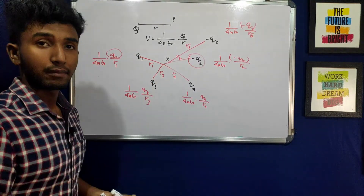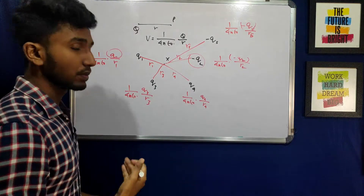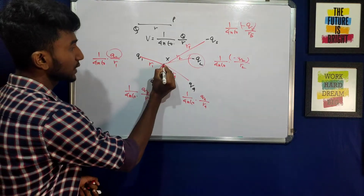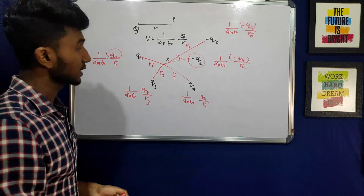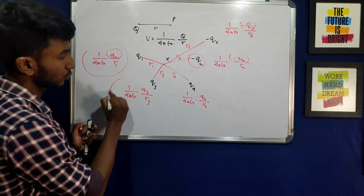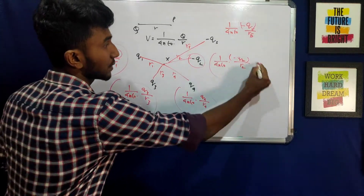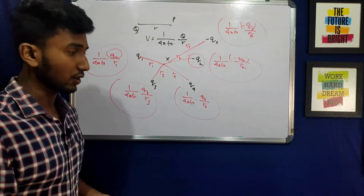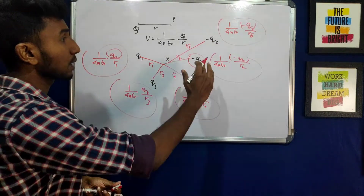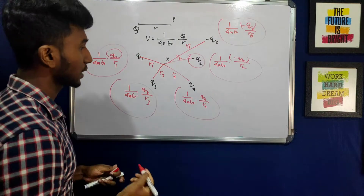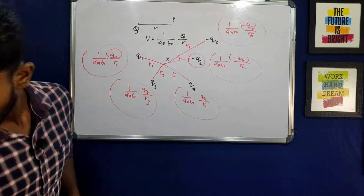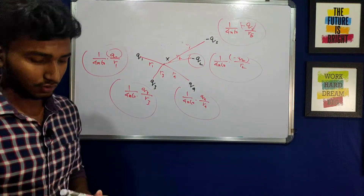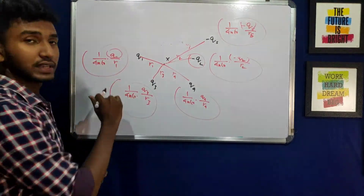The distance of point X is noted. We have to find the total potential at point X. So you have to write the first step — the net potential V at point X equals zero.